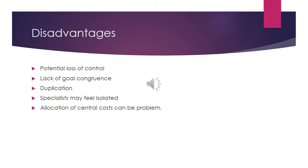Specialists may feel isolated as general managers will have less concentration upon specialization. Central costs such as accounting or human resource costs — while calculating or allocating such costs — can be a problem for divisions because such costs are being provided centrally.